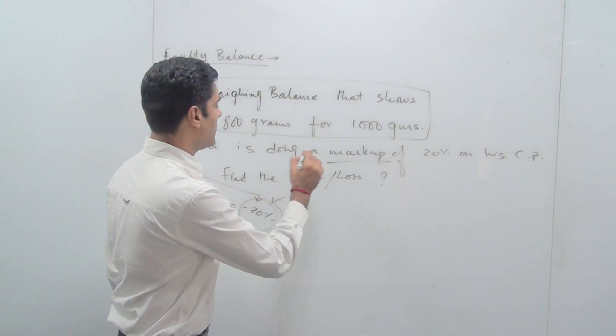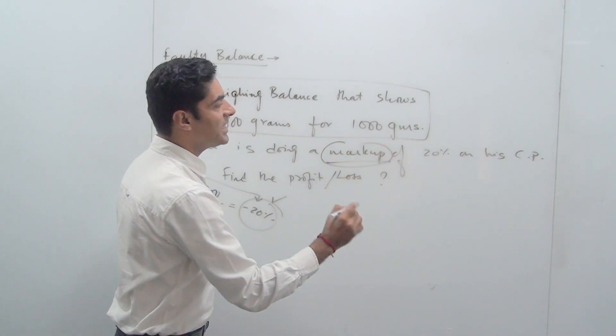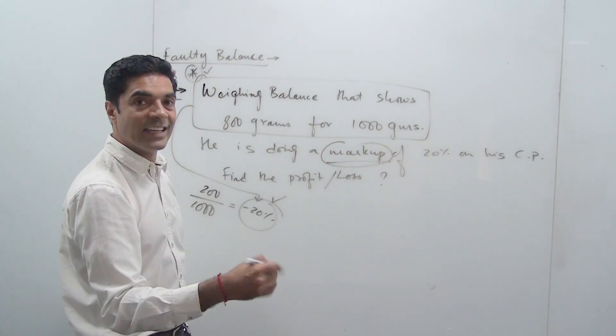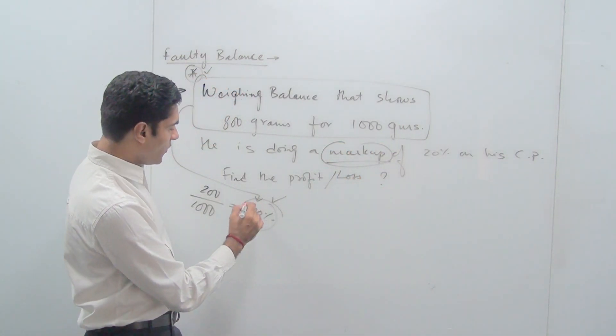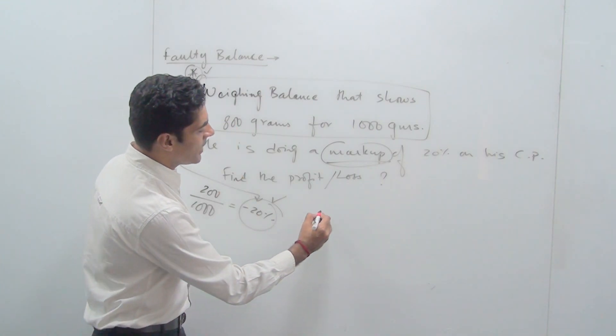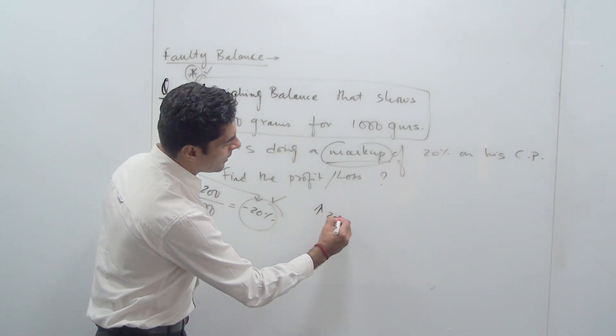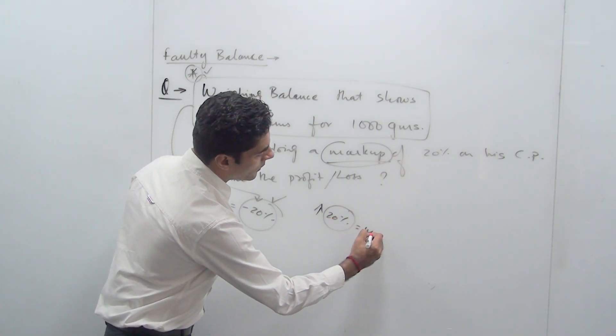Now as I have told you that markup is nothing but percentage increase on CP, that means it is an incremental value. So there is a loss of 20 because of a flaw in weighing balance and there is an increment of 20 because there is a markup of 20%.